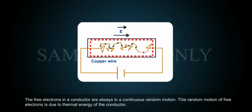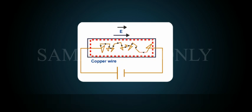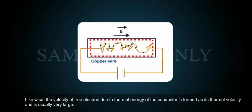The free electrons in a conductor are always in a continuous random motion. This random motion of free electrons is due to thermal energy of the conductor. The velocity of free electrons due to thermal energy of the conductor is termed as its thermal velocity and is usually very large.